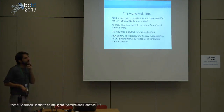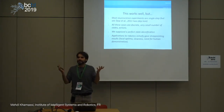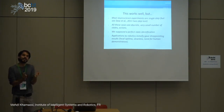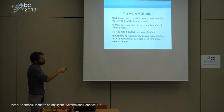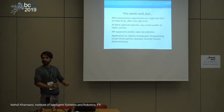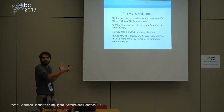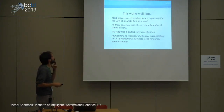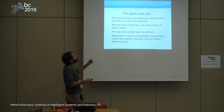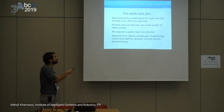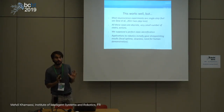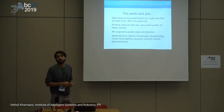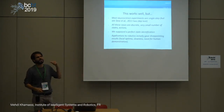Let me finish this part on model-free by noting its limitations. Most experiments in neuroscience using these models are single-step experiments — you make a decision and observe the feedback. The states are discrete with a small number of states and actions, assuming perfect identification. Applications to robotics initially gave disappointing results: very slow learning, convergence to local optima, unlearning due to constant running reinforcement learning, and a need for human demonstration to simplify exploration.